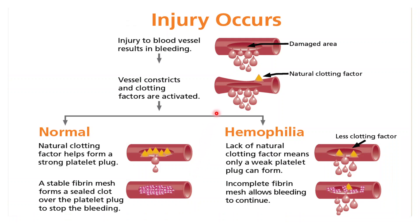This further shows that normal blood releases natural clotting factors which form a platelet plug and a fibrin mesh, stopping the bleeding. But in Haemophilia, there are fewer clotting factors, which forms a very weak platelet plug that is not able to stop the bleeding, and the bleeding continues.